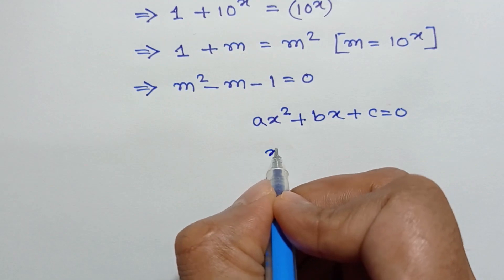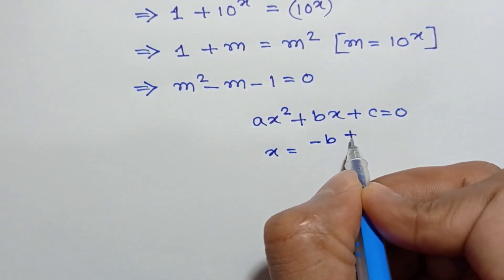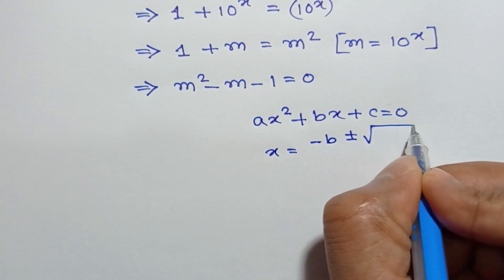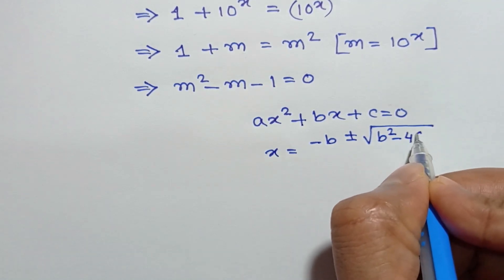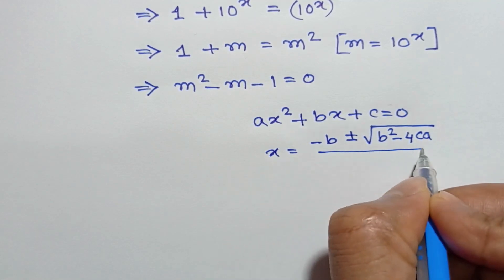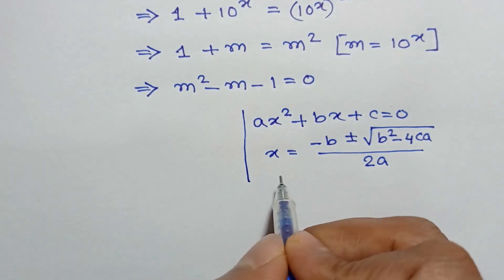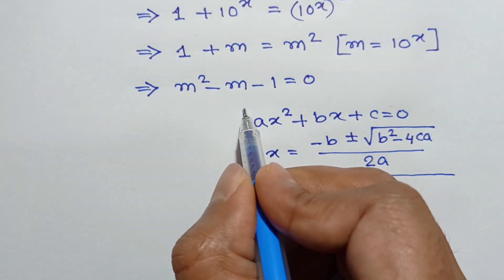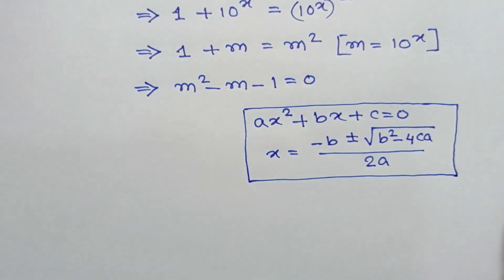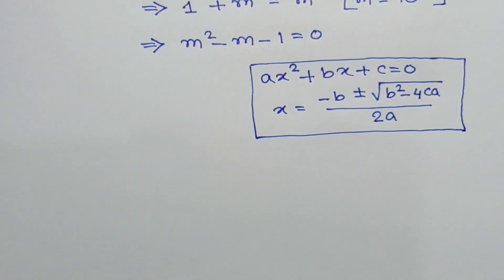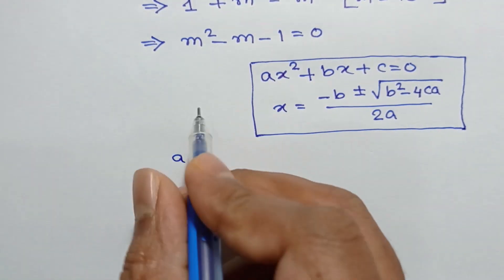This is a quadratic equation. The solution of the equation ax squared plus bx plus c equals 0 is x equals negative b plus or minus the square root of b squared minus 4ac, over 2a.